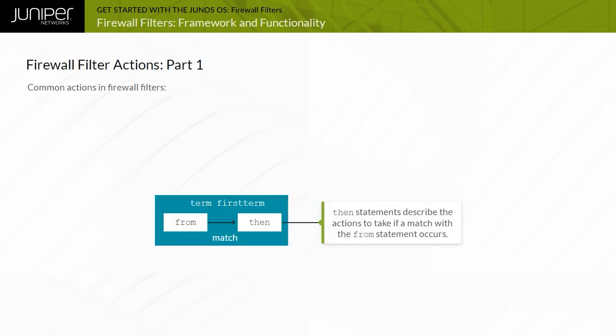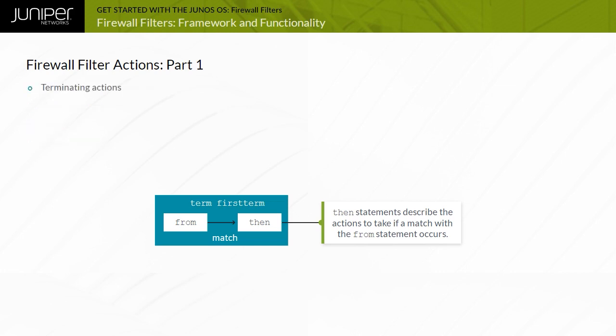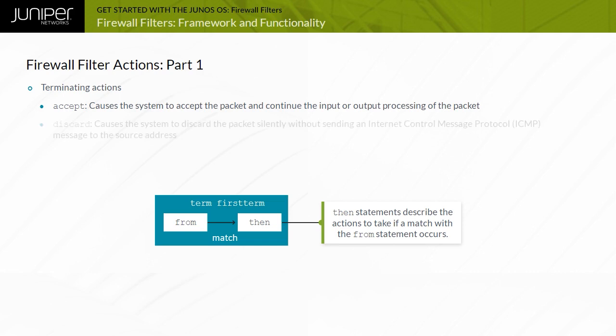You can specify actions in the then clause of a term. Common firewall filter actions include terminating actions, flow control, and action modifiers. Terminating actions cause the evaluation of the firewall filter to stop. The Accept action causes the system to accept the packet and continue processing. The Discard action causes the system to silently discard the packet without sending an ICMP message to the source address.